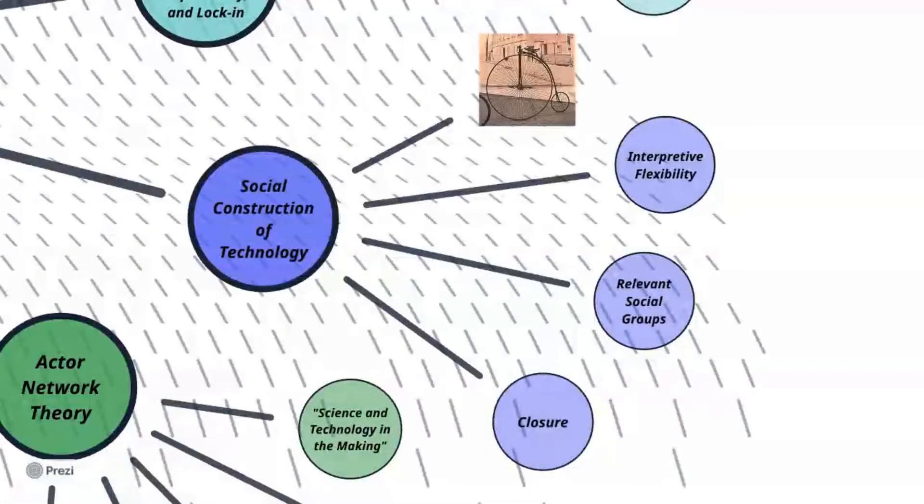As previously mentioned, in this course we took a social constructivist view on technology. The SCOT framework challenges the linear model of innovation, suggesting that innovation is in fact multi-directional. The first step is to show interpretive flexibility. That is, what does the technology mean to different people?